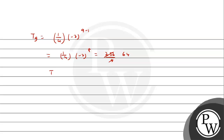The 9th term equals 64, and the nth term is (1/4) times (minus 2) raised to the power (n minus 1). These are the most appropriate answers to this question. Hope you understood it well. Best of luck.